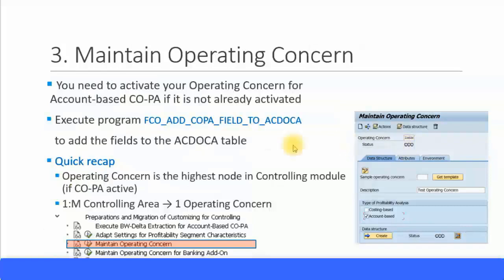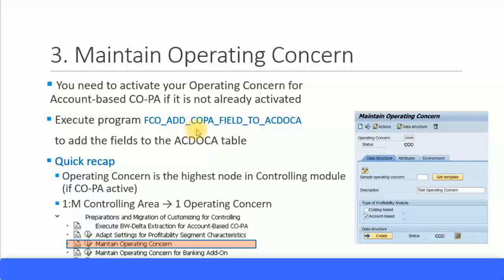The next step is to maintain the operating concern. This screen is very familiar with what you used to do before in ERP6. If you have not activated your operating concern for account-based COPA, now is the time to activate it. Check this checkbox and you can activate your operating concern — the status should be in green, which means active. After you have activated the operating concern, you need to execute the program FCO_ADD_CODE.